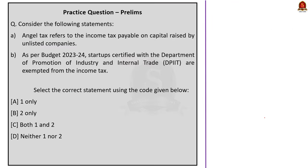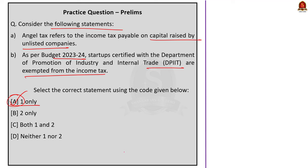Practice question: Statement 1 — angel tax refers to income tax payable on capital raised by an unlisted company. Statement 2 — as per Budget 2023 and 2024, startups certified with the Department of Promotion of Industry and Internal Trade are exempted from angel tax.